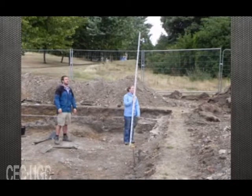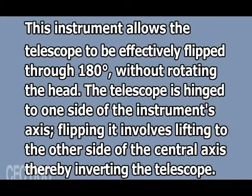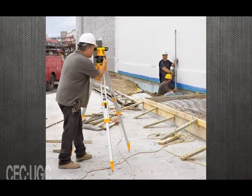Some dumpy levels have a bubble level ensuring an accurate level. A variation — often used by surveyors where greater accuracy and error checking was required — is a tilting level. This instrument allows the telescope to be effectively flipped through 180 degrees without rotating the head. The telescope is hinged to one side of the instrument's axis. Flipping it involves lifting to the other side of the central axis, thereby inverting the telescope. This action effectively cancels out any errors introduced by poor setup procedures or errors in the instrument's adjustment.